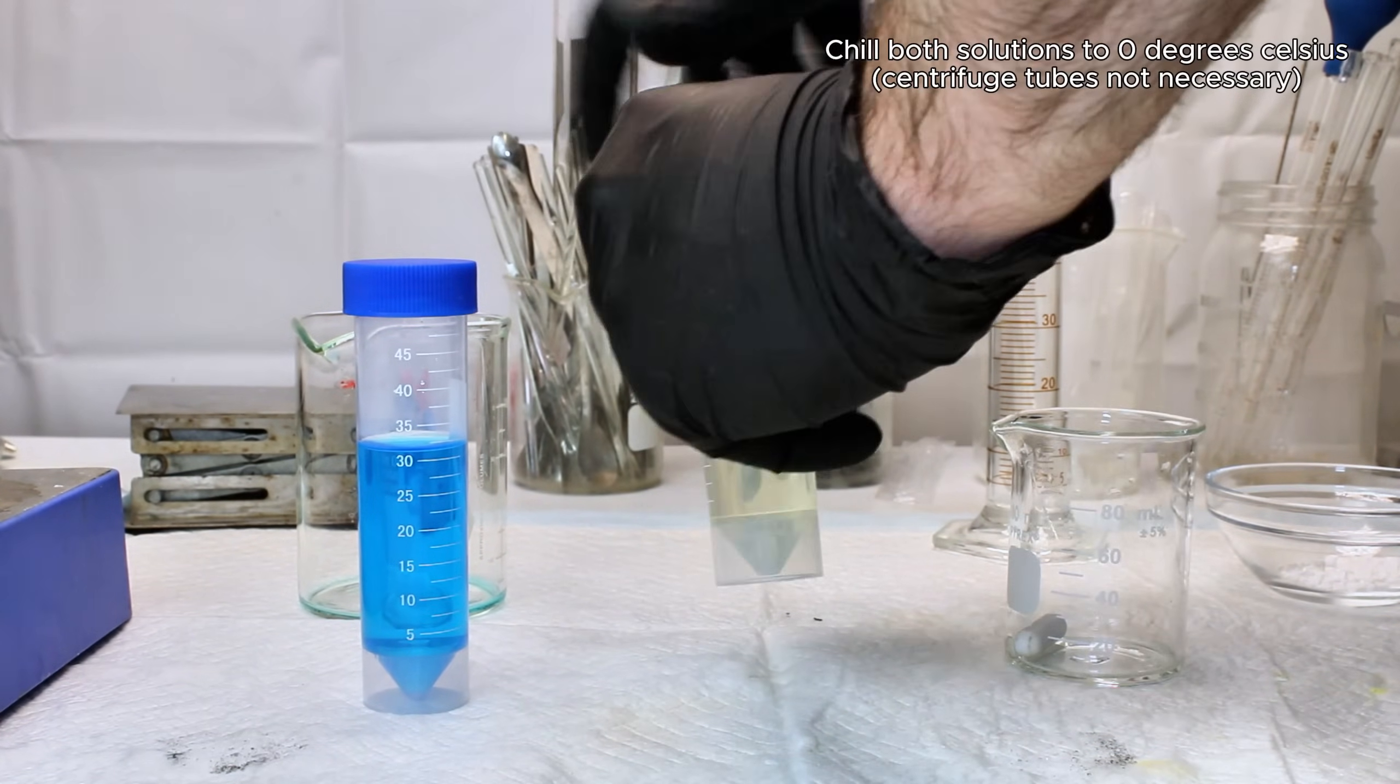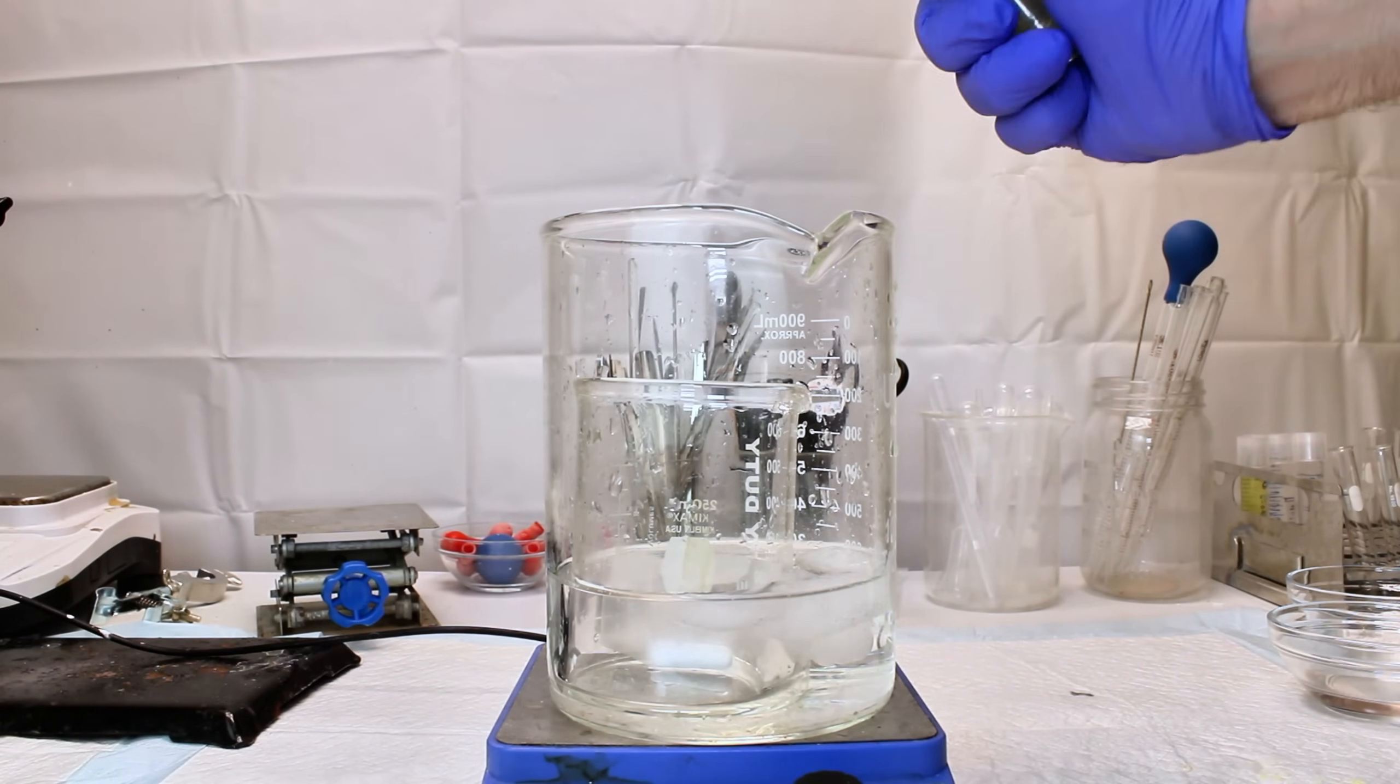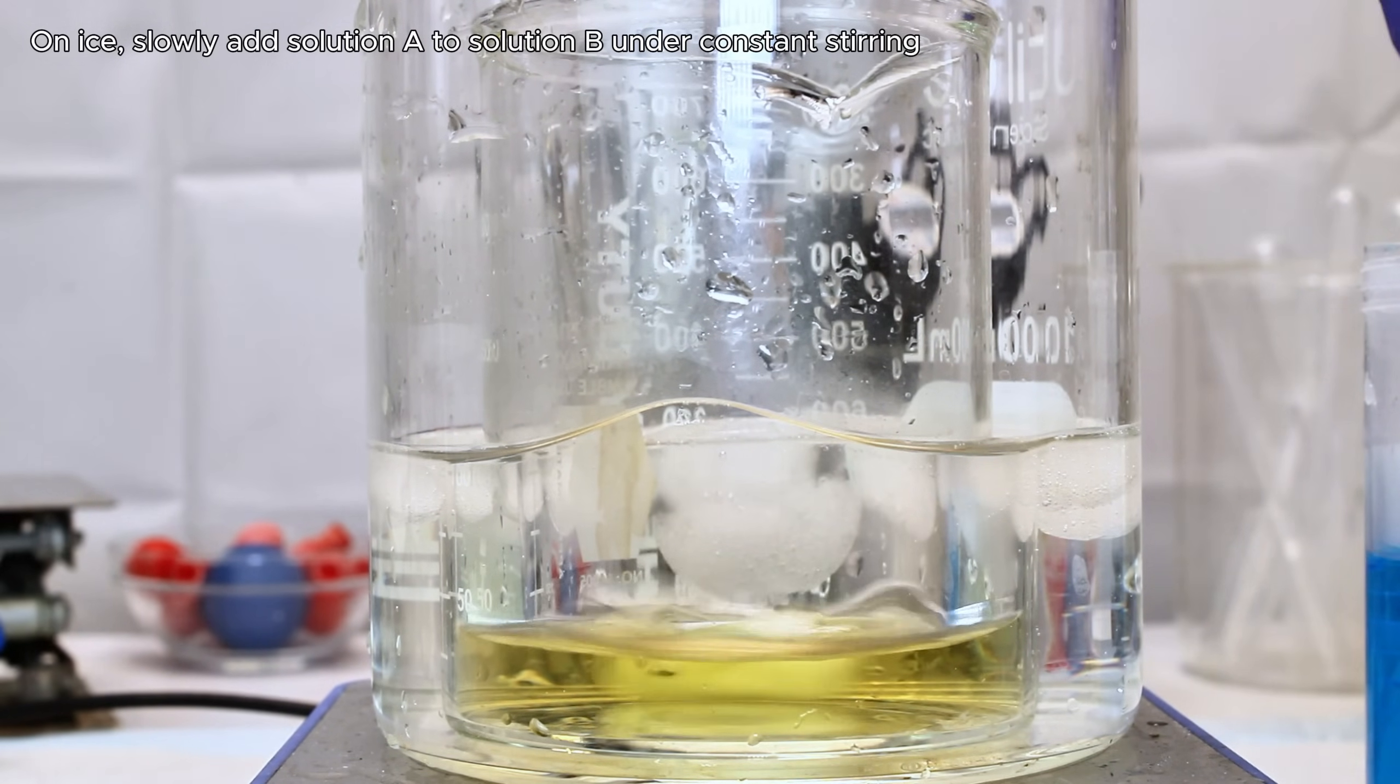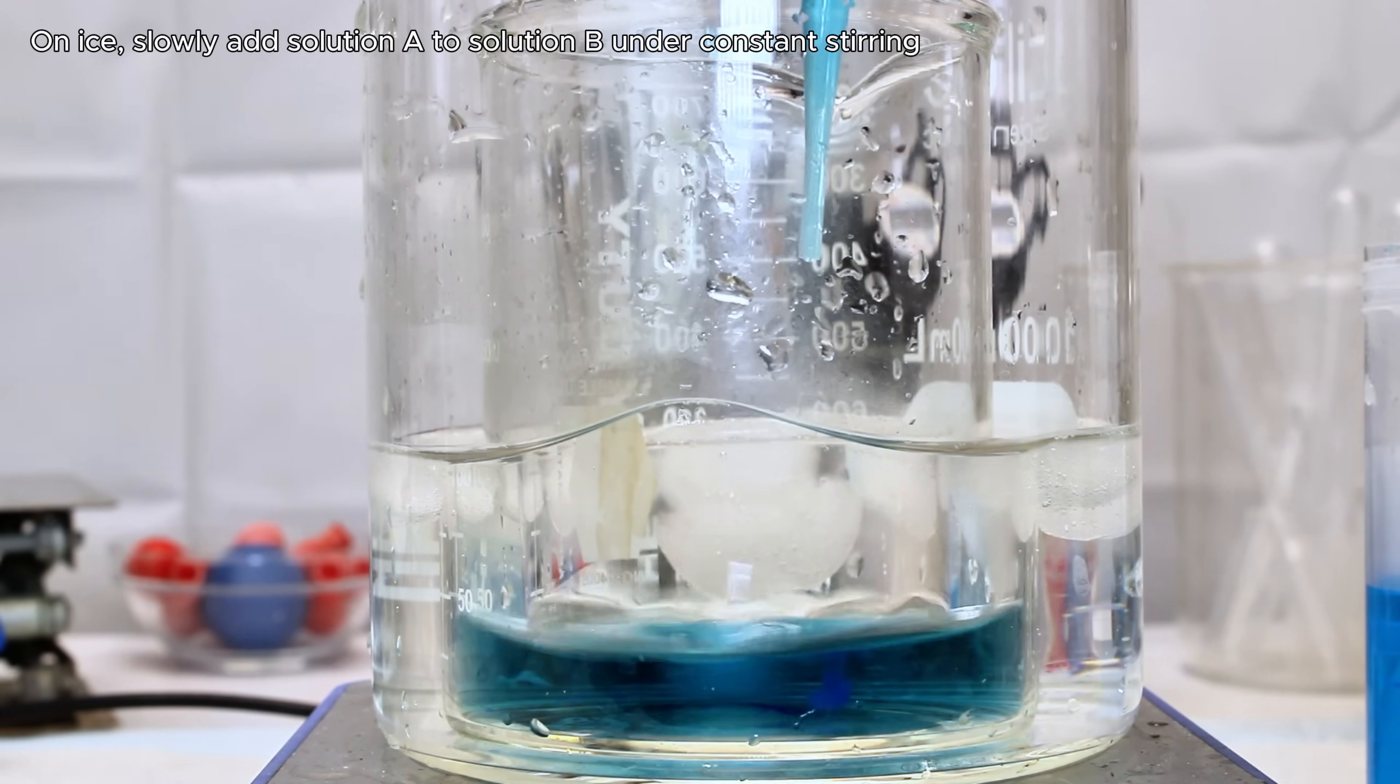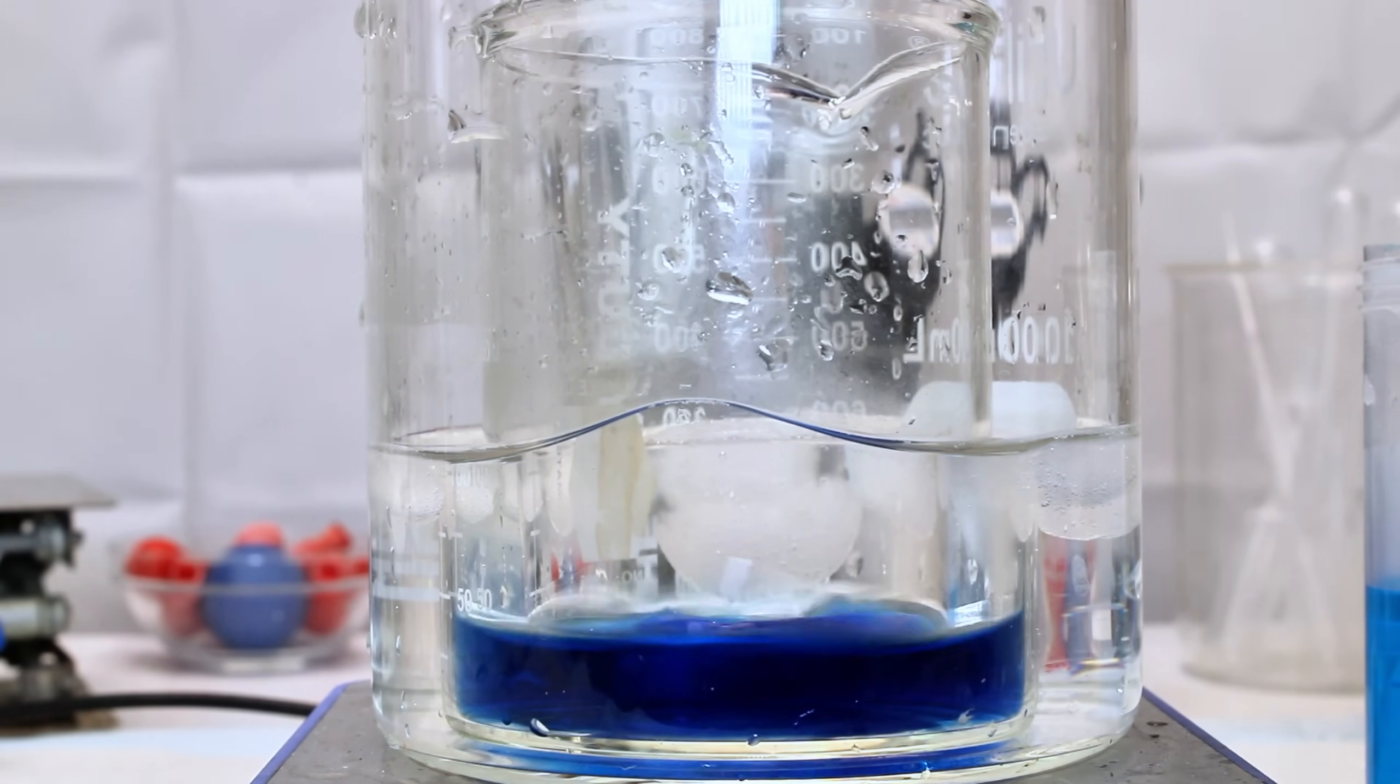I then removed both solutions from the ice bath and poured solution B containing the ammonia and persulfate into a beaker, which was then placed into a larger beaker containing ice water in order to keep everything as cold as possible. I tossed in a stir bar and began slowly adding the cold solution of copper sulfate to the ammonium persulfate under constant stirring. As soon as the copper sulfate is added, the solution turns an extremely dark purple as the reaction quickly proceeds, which happens in two discrete steps.